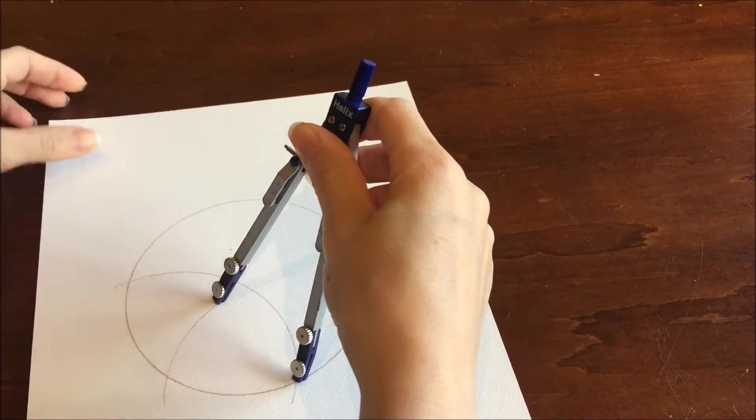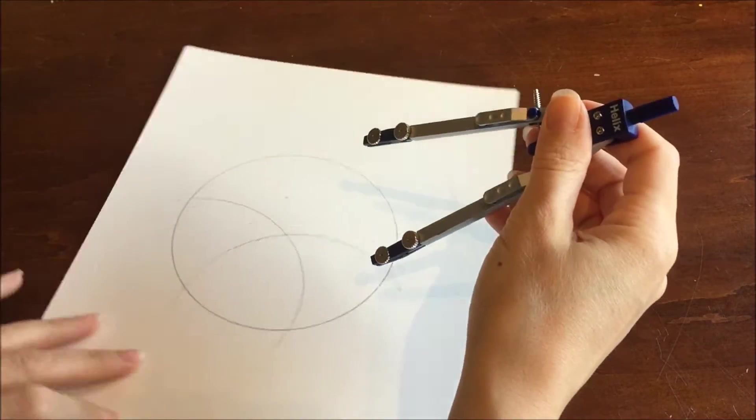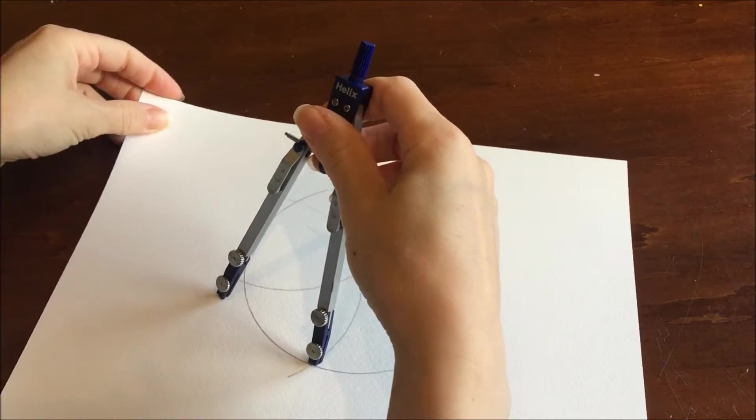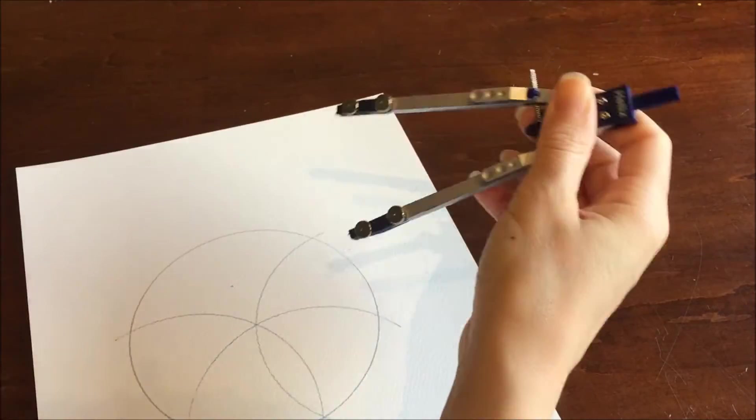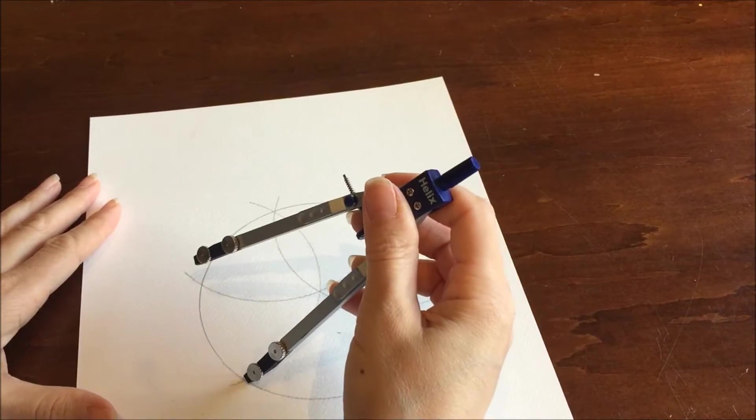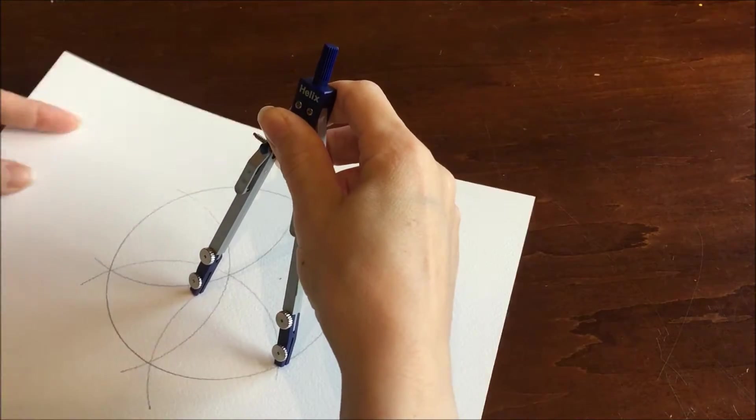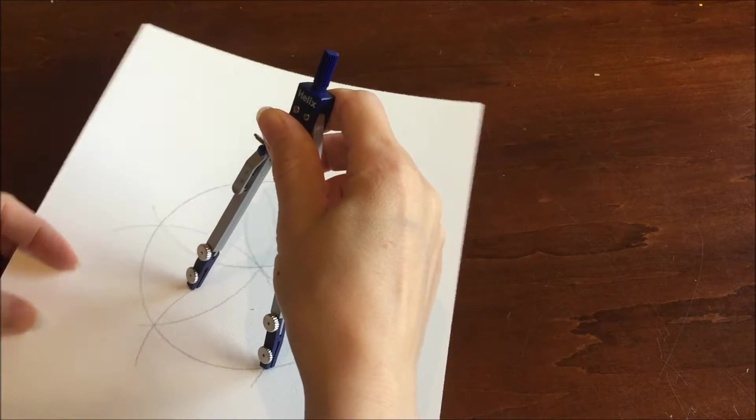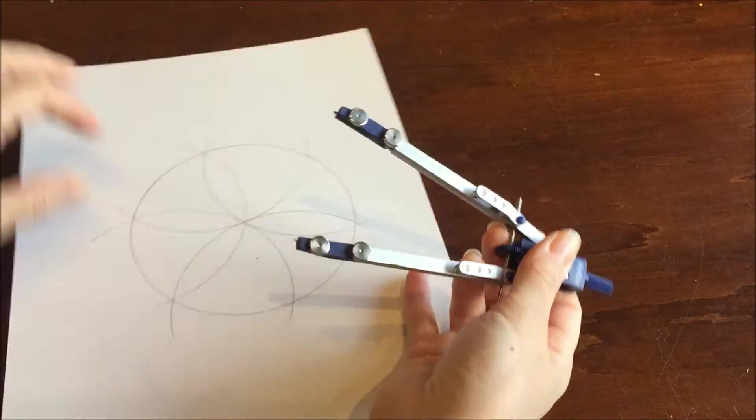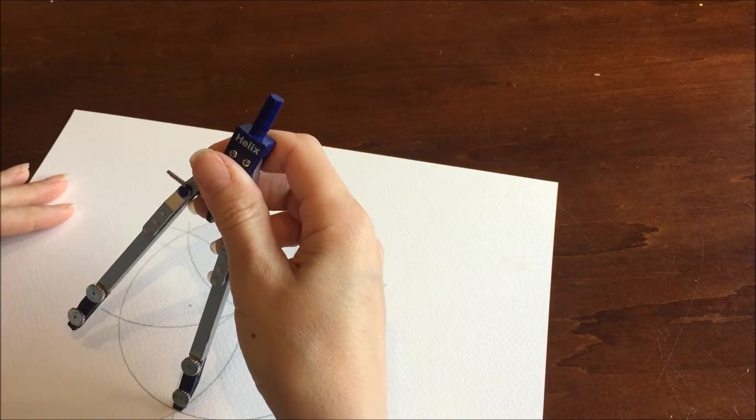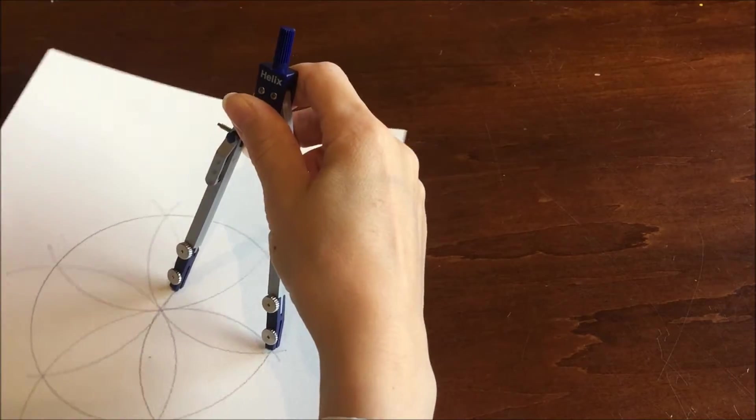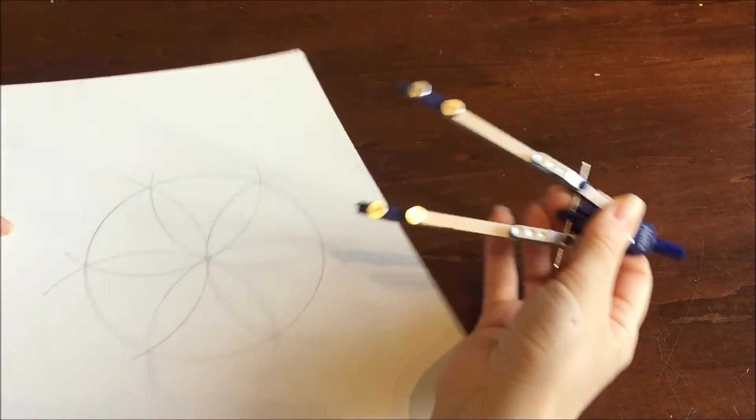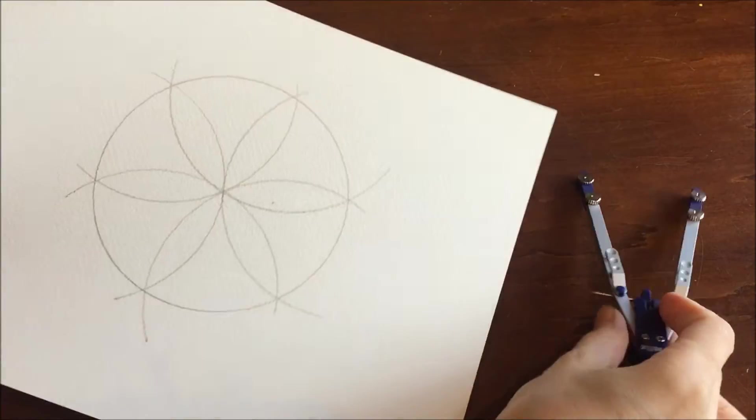Then you want to place your pointer at that first intersection and draw another arc. Continue doing this all the way around the circle, placing your pointer at each place where the arc intersects the circle. In this way, you're going to end up with six somewhat petal-shaped divisions in a circle. It looks really pretty when it's done.